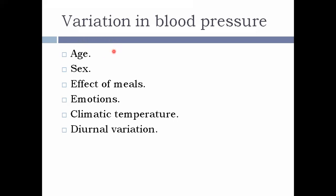From birth till one month, blood pressure increases rapidly. After one month, it increases slowly — not as rapid as before. The systolic blood pressure at around one month is about 80 mmHg. Then, from adolescence up to 40 years of age, blood pressure is maintained at a normal range of 120/80 mmHg.